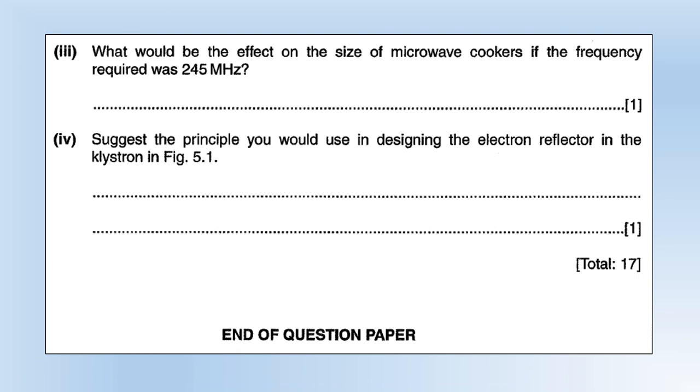What effect would be on the size of microwave cookers if the frequency required was 245 megahertz? That's going to change things quite considerably. To get 10 times the frequency we need 10 times the radius, so instead of the radius being 3.9 centimeters, the radius is now 39 centimeters or the diameter is now essentially 80 centimeters. If you've looked at a microwave oven recently you will see they're all much smaller than that, so if your diameter is 80 centimeters you're going to need to make your microwave a lot bigger.